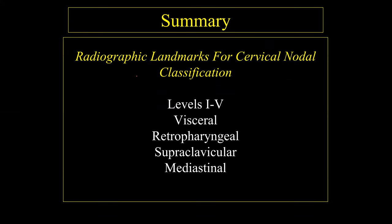In summary, we covered the radiological landmarks for cervical nodal metastasis, the various lymph node levels (1 through 4, visceral, retropharyngeal, supraclavicular, and mediastinal), classic size criteria, and primary echelon drainage — which allows you to focus attention on lymph nodes at greatest risk for metastasis, improving diagnostic accuracy, staging, and ultimately the likelihood of cure for patients.